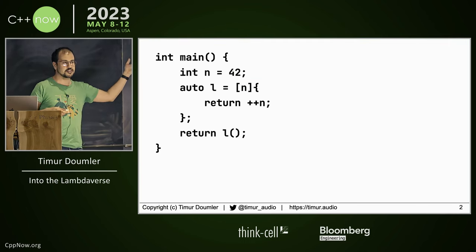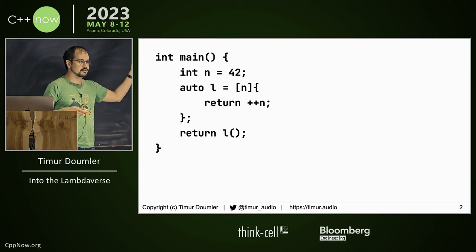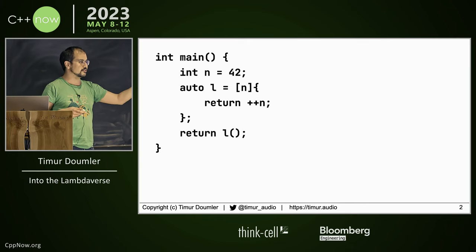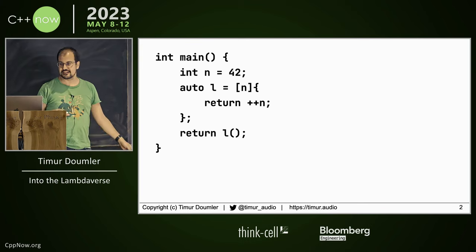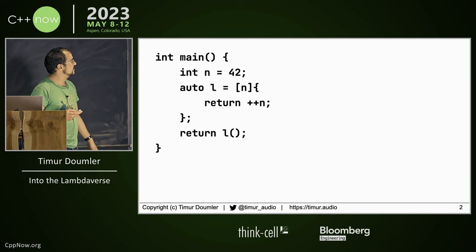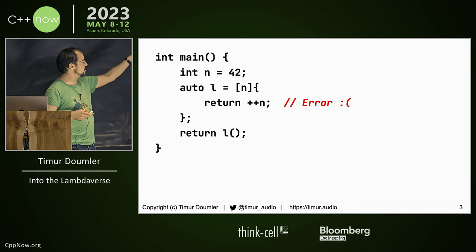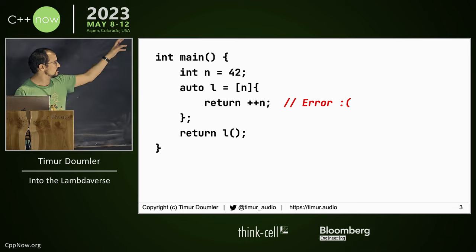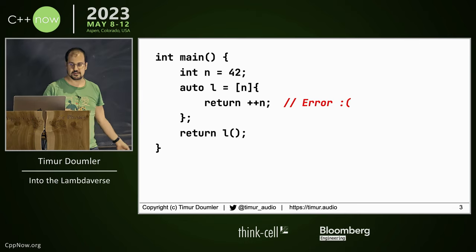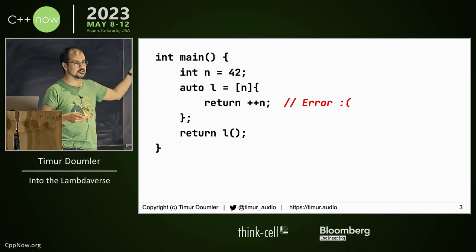So does this code compile? No. Why not? Because you said so last time. Yes — there's an error here because you're modifying a captured variable. You can't do that. How do you fix that?